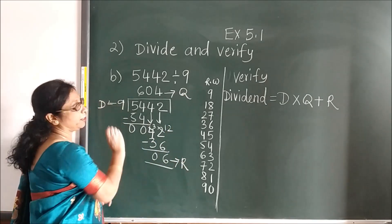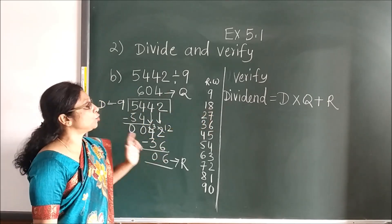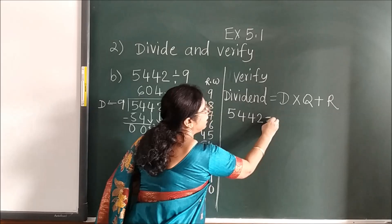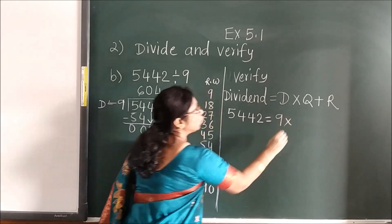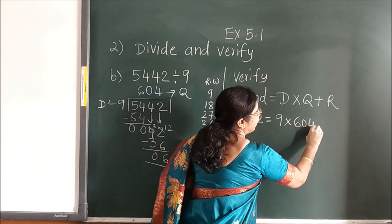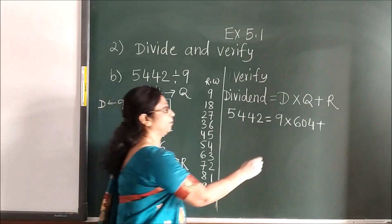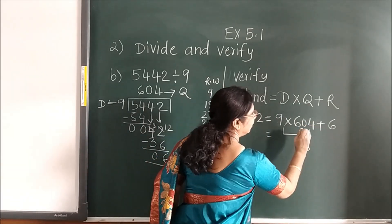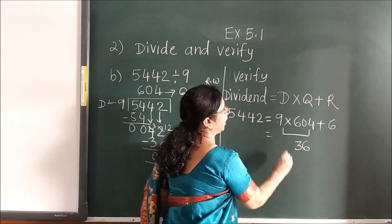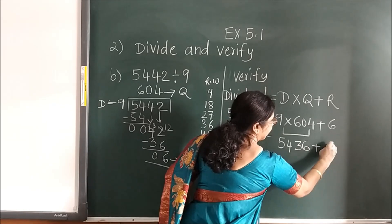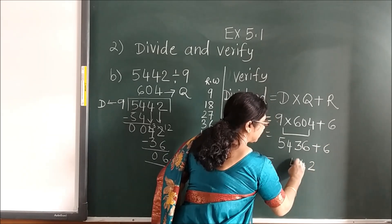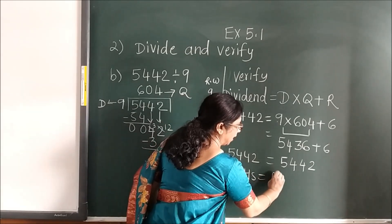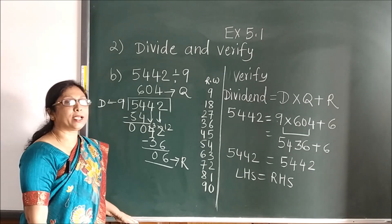The divisor is 9. Now to verify: dividend is the question itself. Divisor is 9, quotient is 604, remainder is 6. Multiply: 9 fours are 36 — write 6, carry 3. 9 zeros are 0 plus 3 is 3. 9 sixes are 54. Add the remainder 6 — you get 5442. And this answer is also 5442, so LHS is equal to RHS. In this way you can solve the sum.